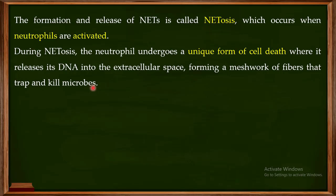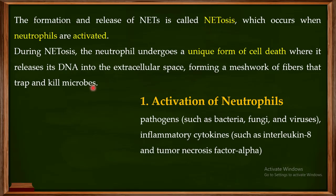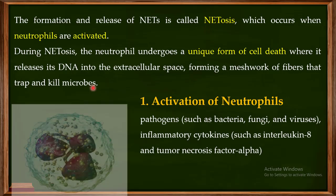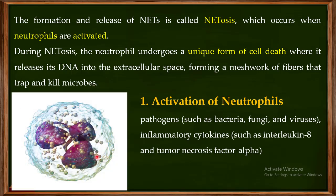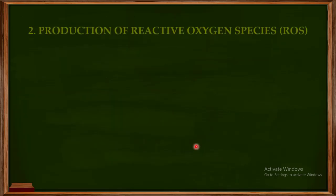Now, the first step in the process of NETosis is the activation of the neutrophils. The activation of neutrophils can occur through a variety of mechanisms. One mechanism includes the interaction with pathogens like bacteria, fungi, viruses, and parasites. Neutrophils can also get activated by inflammatory cytokines like interleukin-8 or tumor necrosis factor alpha. So the first step is to get the neutrophils activated — either by pathogens or by inflammatory cytokines.